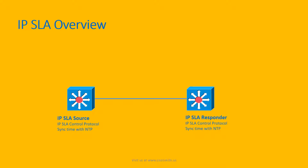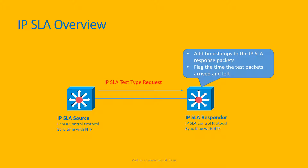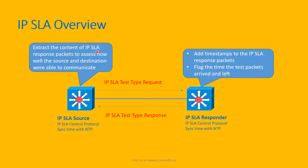Here's how it works. The IP SLA source generates an IP SLA test type request. The IP SLA responder adds a timestamp to the IP SLA response packet it is going to send, and it also flags the time the test packet arrived and left the device. After that, it responds with the IP SLA test type response packet. The IP SLA source device then extracts the contents of the response packet to assess how well the source and destination were able to communicate.